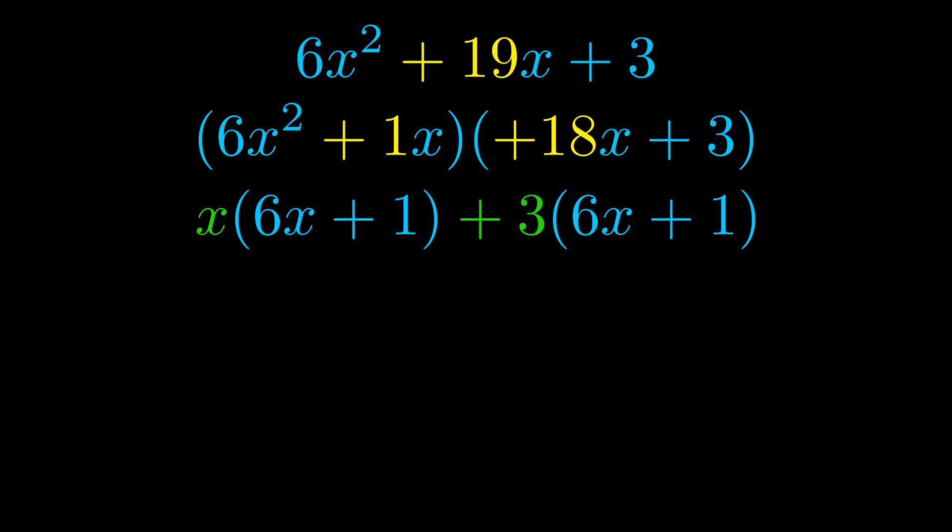Notice also how what remains inside of the parentheses is the same in both cases. The blue values are the same. Those blue values will become one of our factors and we will combine the two green values, the GCFs that we pulled out, to get the other one. And that is our fully factored equation.